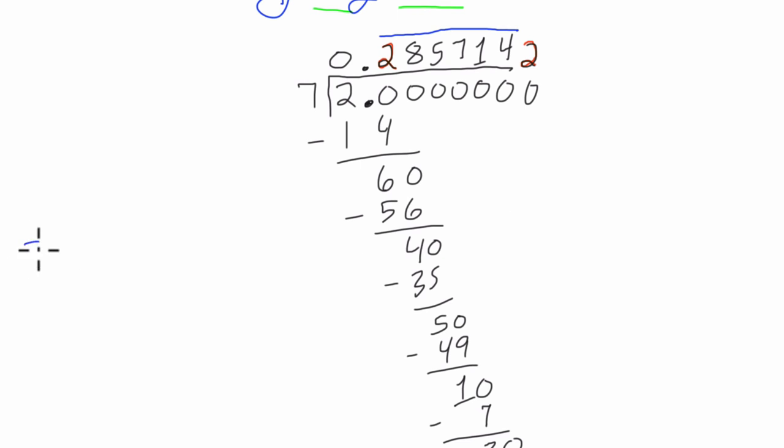That 2 divided by 7, if you do it forever, all you'll get is 0.285714 repeating forever and ever and ever. That's called a repeating decimal. Alright, hope this helped.